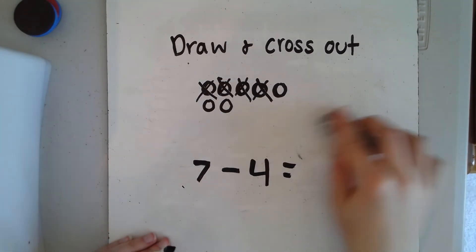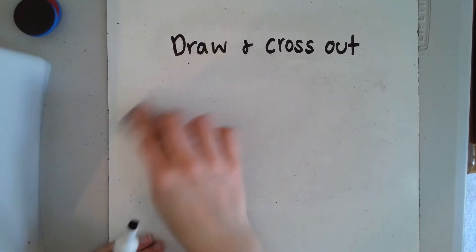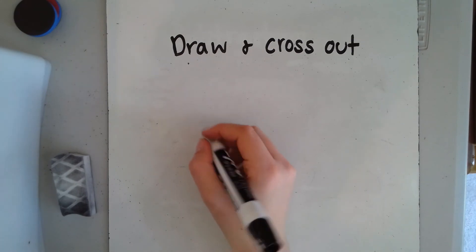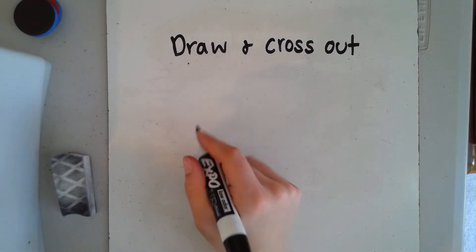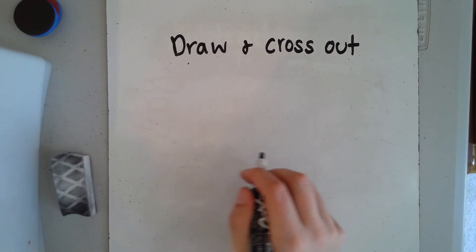So now I'm going to give you a problem to practice drawing and crossing out. Let's see if you can do it. Remember, when you draw your picture you don't have to draw anything that's complicated—circles are really easy and I highly suggest drawing those.